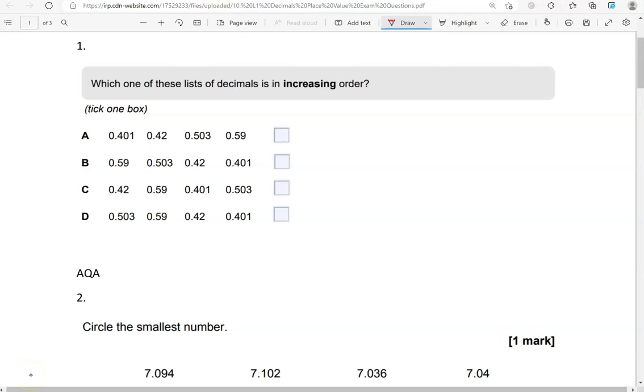So the decimals we've got are 0.401, 0.42, 0.503, 0.59.